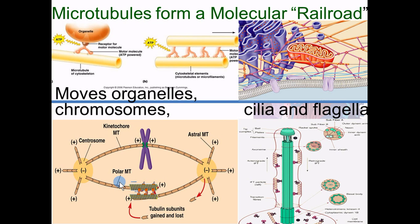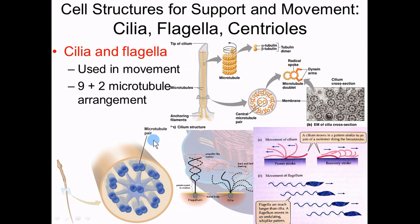Here's a more detailed slide on flagella. You have nine pairs of microtubules revolving around one central pair. The outer ones pull on one side differently than the other side to wiggle back and forth or propel. This is the arrangement that gives flagella their movement.